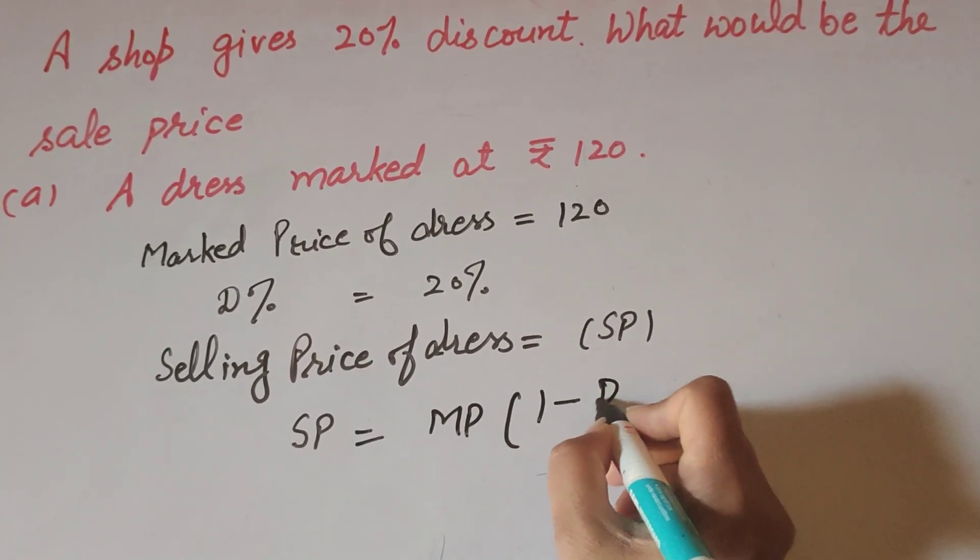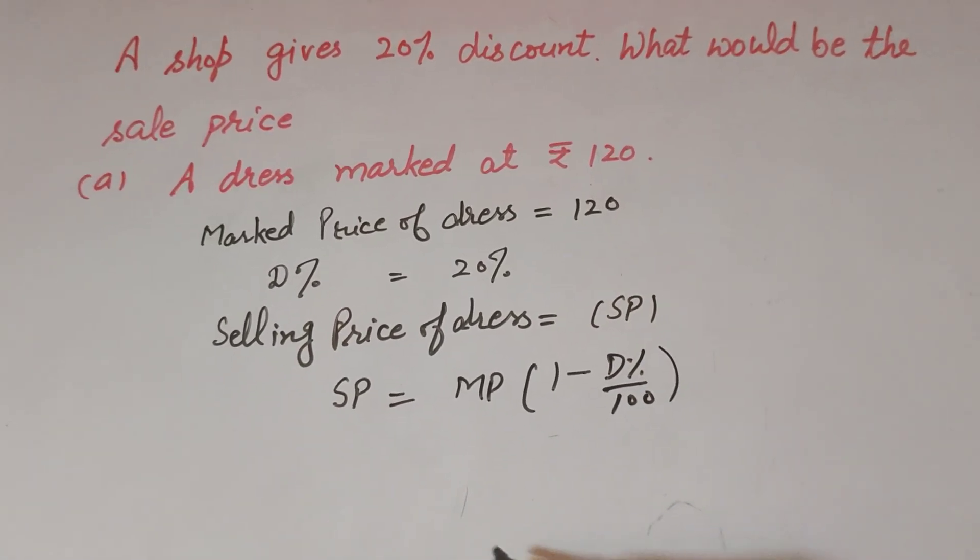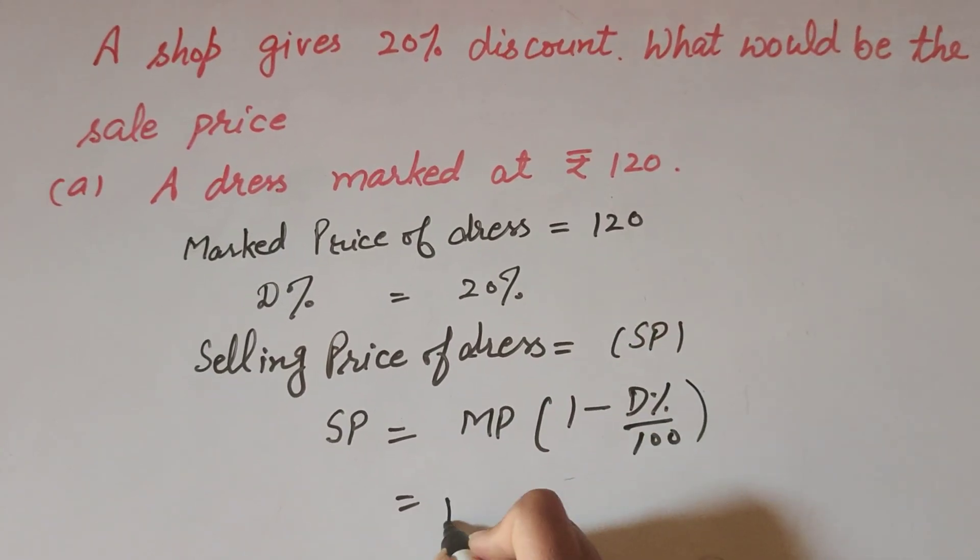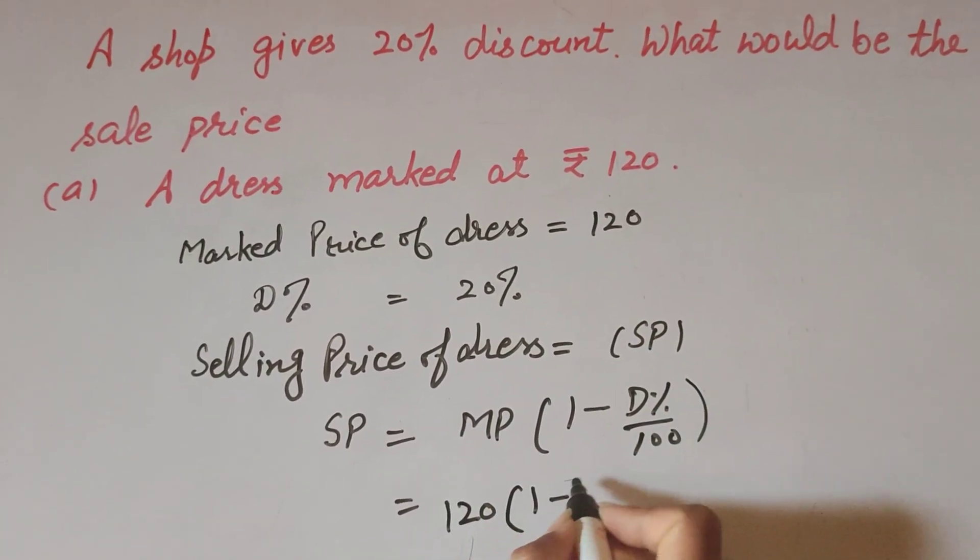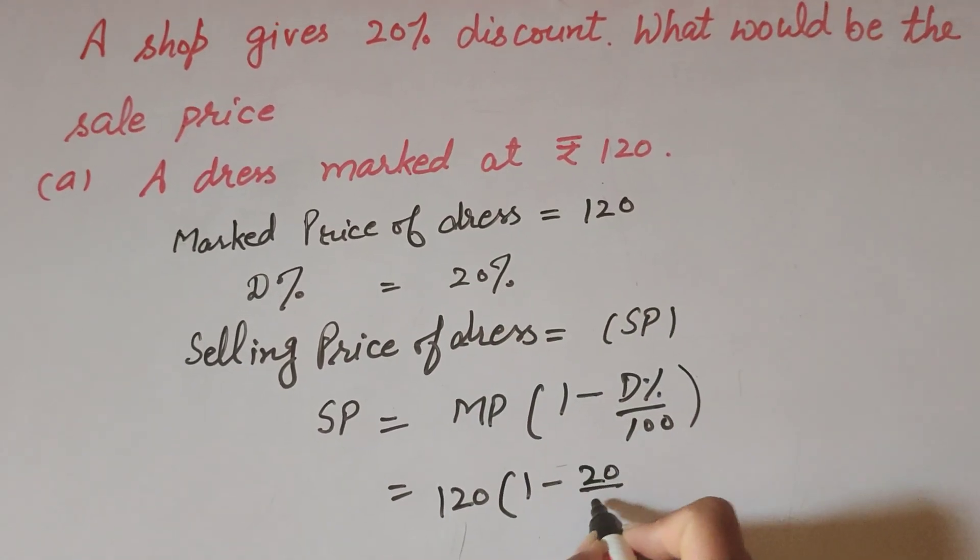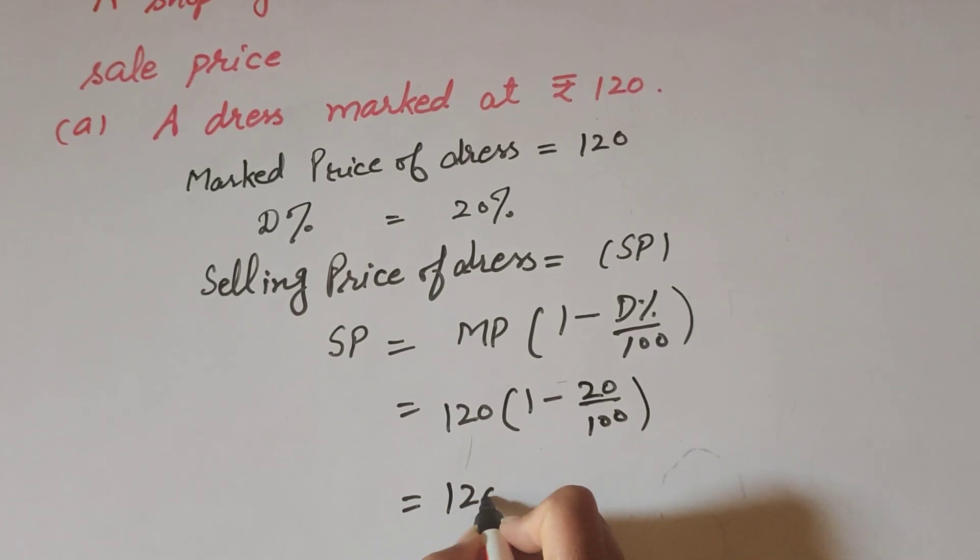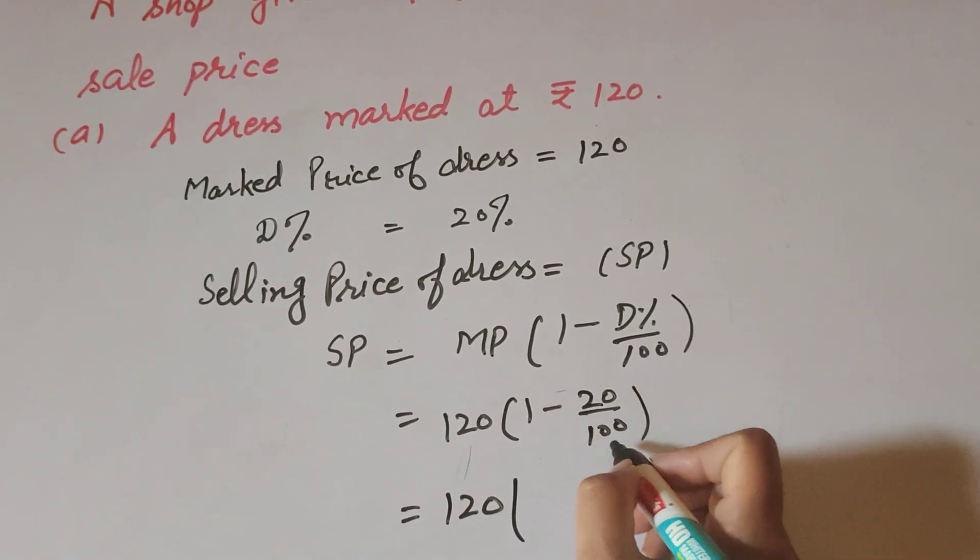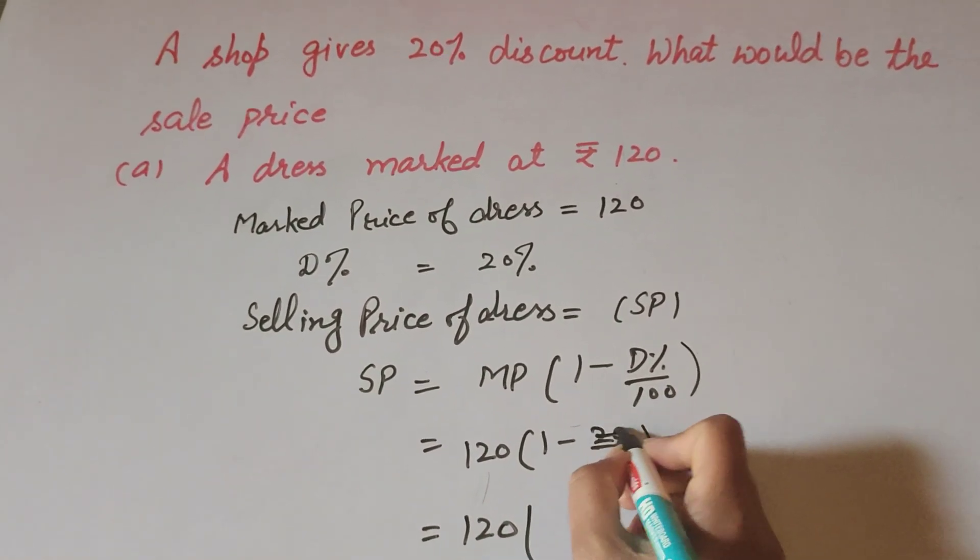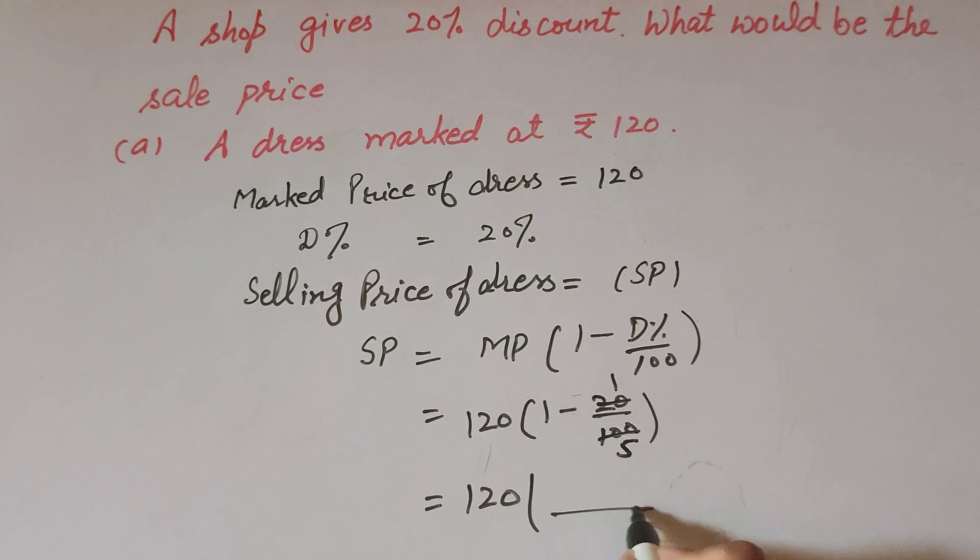In this, SP that we have to find, MP is marked price, it is 120. 1 minus discount percent, it is 20 over 100. It is equal to 120, 20 and 100 both are divisible on the table of 20, so we cancel them. 20 divided by 20 is 1, 100 divided by 20 is 5.